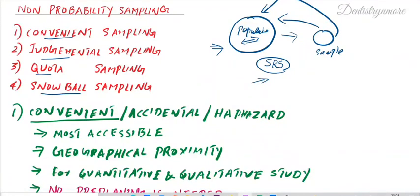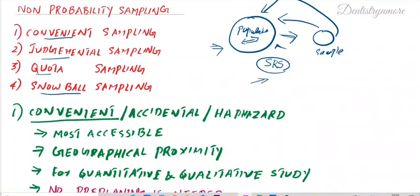Before moving to each technique, let me explain a little about sampling — what is a sample and what is a population. We have a bigger population, and from which we take a small sample for ease of study, because it's not practically possible to conduct a study in a bigger population. We want a sample that represents the population.